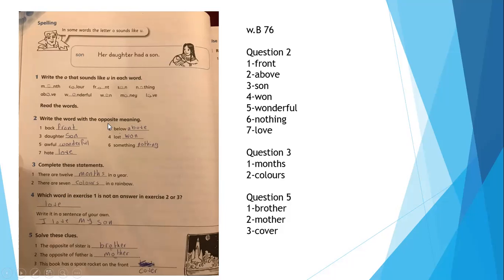Here, choose a word in exercise number one that is not answered in two and three and make a sentence. We don't use love in this question. And here, we are going to write a sentence. For example, I love my son.